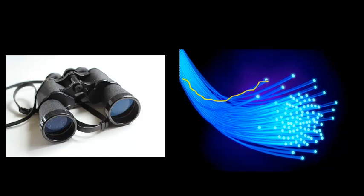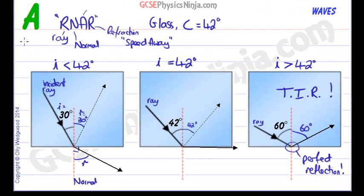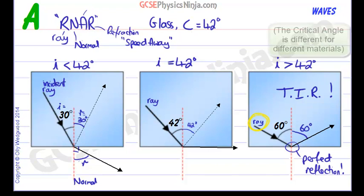So total internal reflection, remember ANAR will give you the idea of how to work out where the ray goes. We can't use speed away for the refracted ray, but when that angle of incidence for the incident ray is greater than 42 degrees or the critical angle, so that's the critical angle, that's when you get total internal reflection.